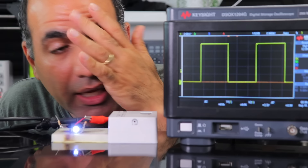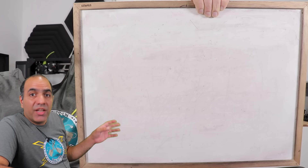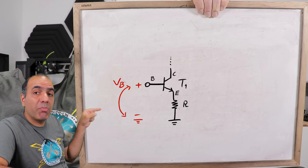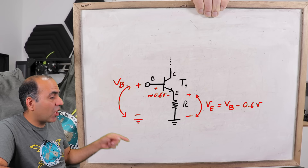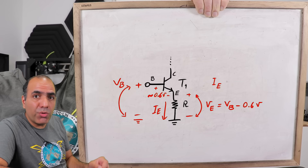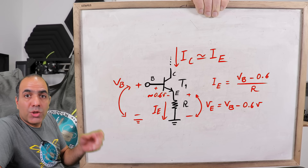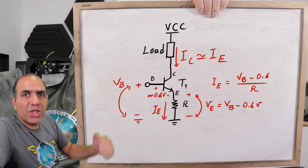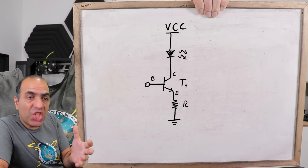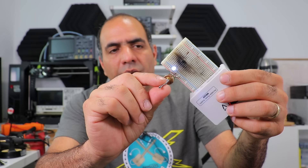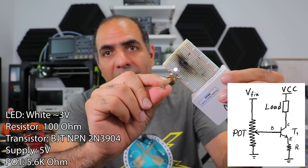Why not just tune the voltage to adjust brightness? A little bit of voltage change across the LED results in huge current change, so it's much harder to do. It's much easier to adjust the current through the LED. Here's a simple current source circuit with a BJT NPN transistor. A fixed voltage at the base, minus the 0.6 volt base-emitter drop, gives a fixed voltage on the emitter resistor and thus fixed current - almost equal to the collector current. So almost regardless of the load or supply voltage, the current remains the same. I'm changing the base voltage with a potentiometer and the brightness changes.